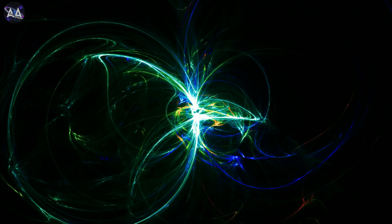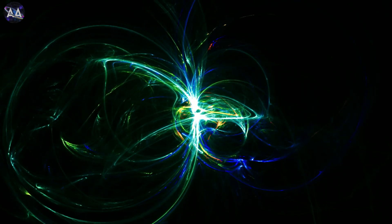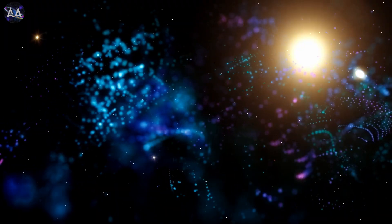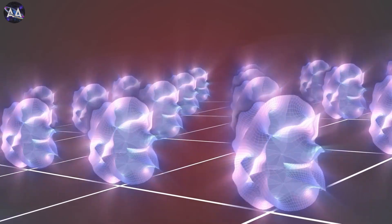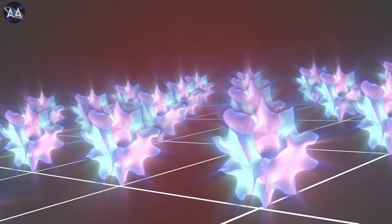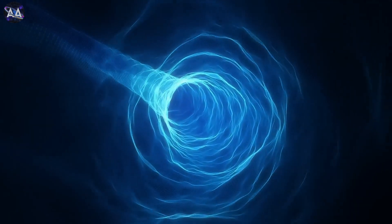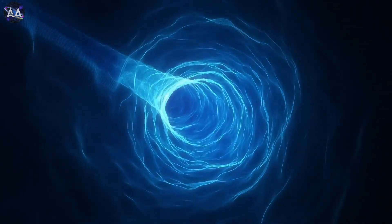Actually, there isn't just one string theory. Over time, scientists have come up with several different versions of it. But here's the cool part: M-theory. M-theory is an idea that unifies all these different versions of string theory into one overarching theory.